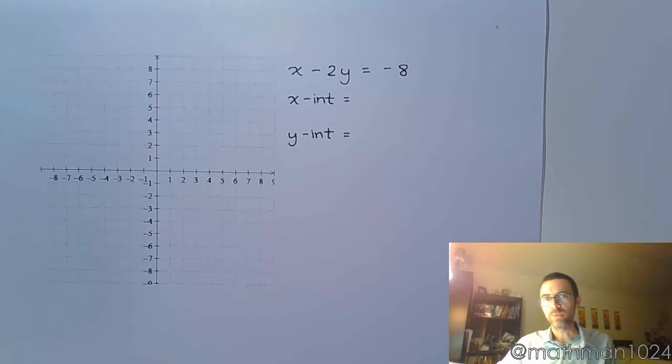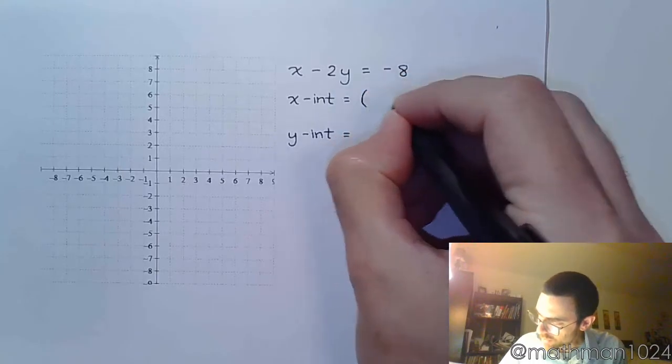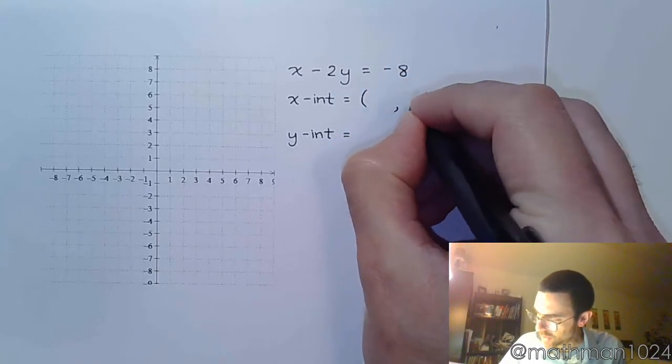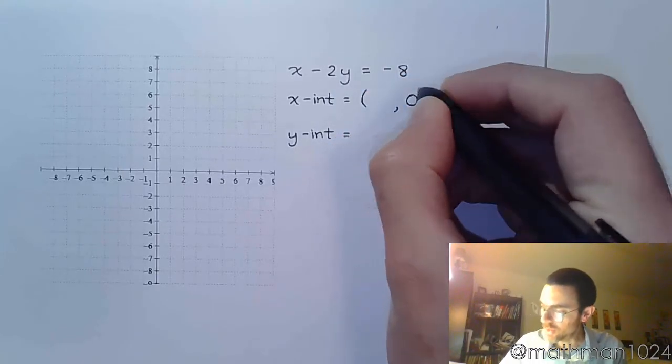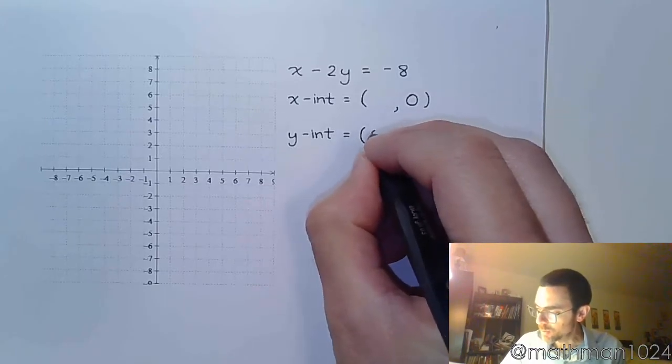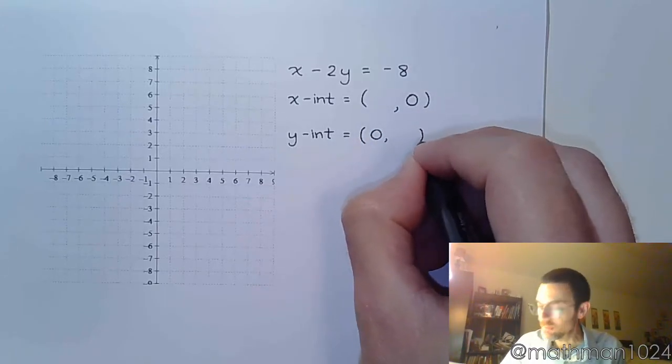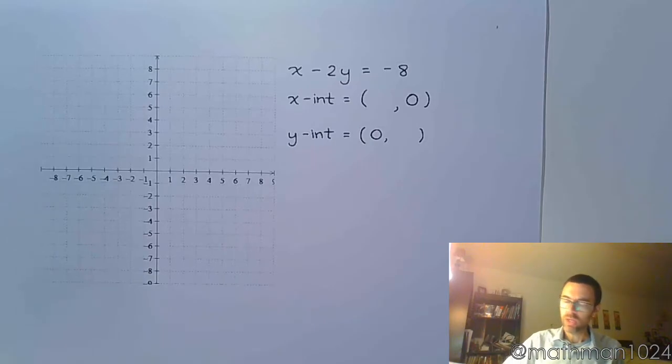Alright, so let's do another example of graphing a linear equation where we need to find the x-intercept and the y-intercept first. Here's what we know about every x-intercept: every x-intercept is going to be something comma 0, and every y-intercept is going to be 0 comma some number.